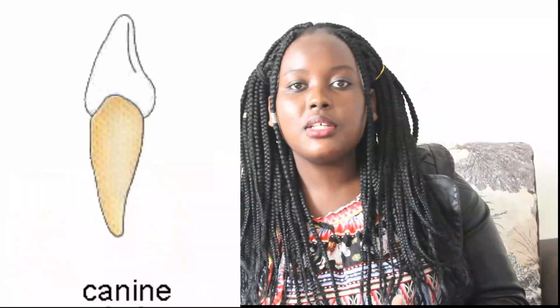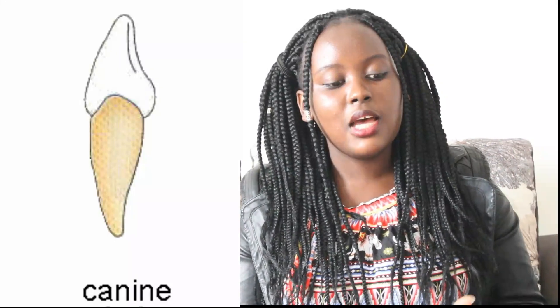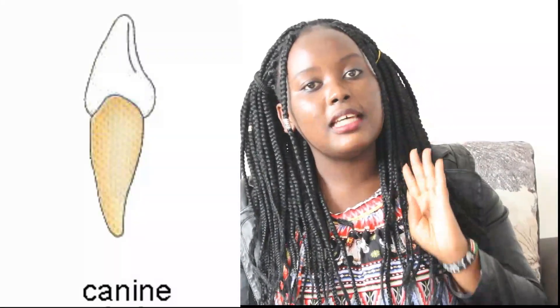The next type of tooth is the canines. There are four canines in total — two in the upper jaw and two in the lower jaw. They also have one root. They are sharp and pointed, which makes their function the tearing of flesh or food. They have the longest root of all the teeth, and their tip comes to just a single point.